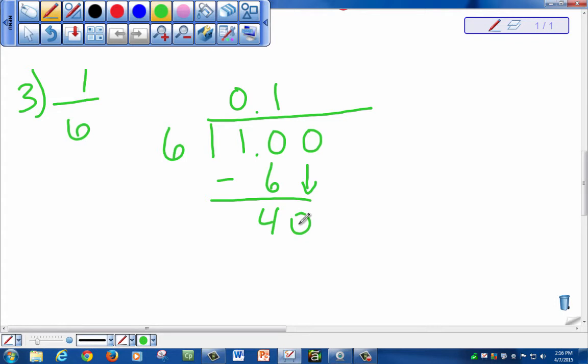6 times what will give you close to 40? 6. So your answer will be 6 times 6, 36. And we subtract again. We borrow. And our remainder is 4.